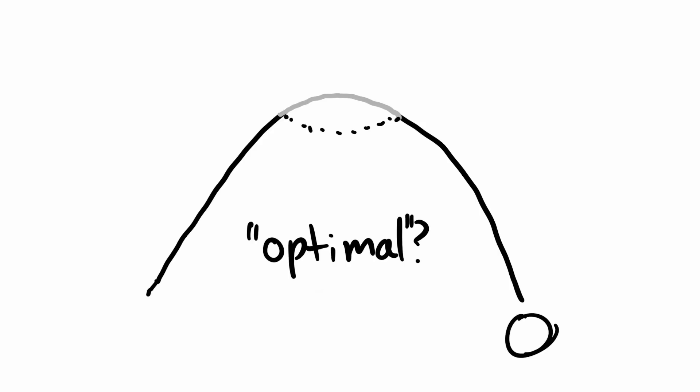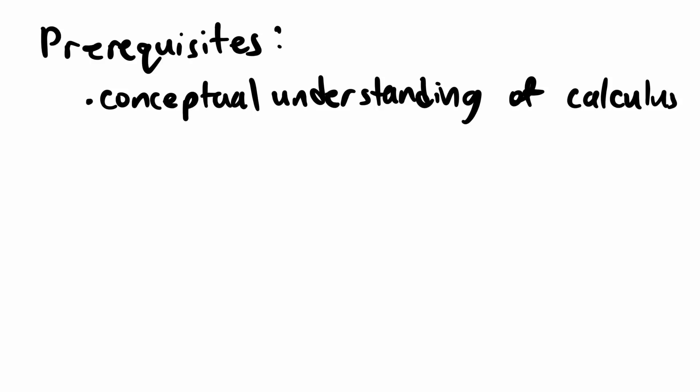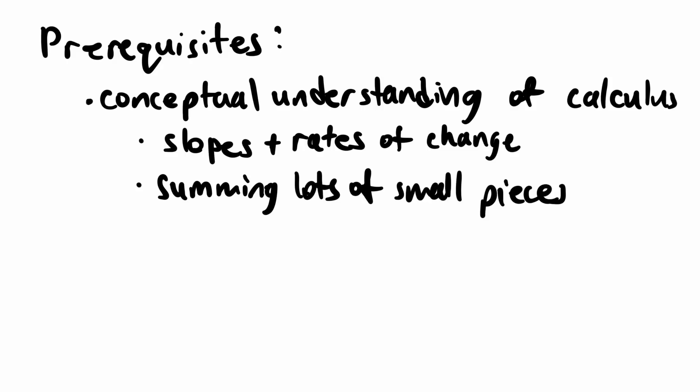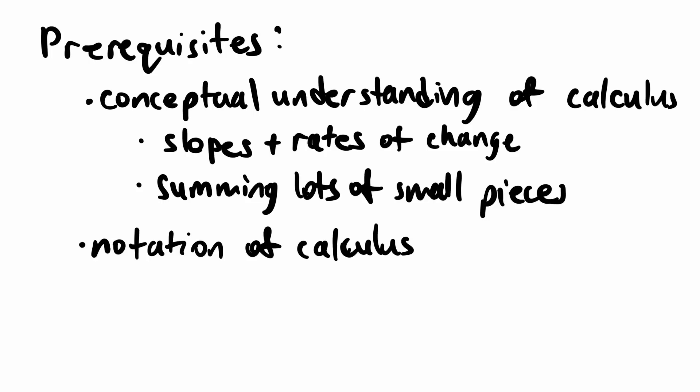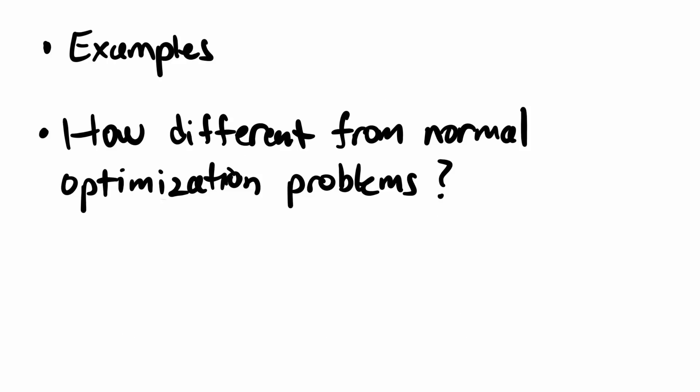To do this, we will need a new mathematical tool called the calculus of variations. In order to understand the calculus of variations, you will need some basic calculus knowledge. You don't need to know how to compute derivatives or integrals, but you should understand how slopes and rates of change are related, as well as how integrals can be thought of as adding a lot of small pieces of something together. Understanding the mathematical notation used in calculus will also be helpful. The reason we need calculus of variations is to solve these optimal path problems, where we need to find some function that is optimal according to some rule.